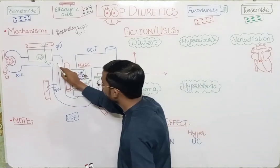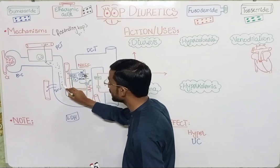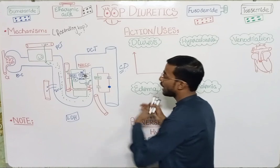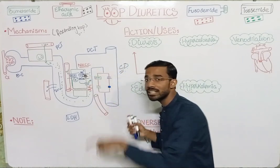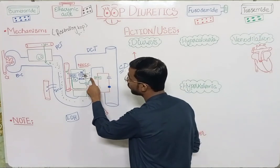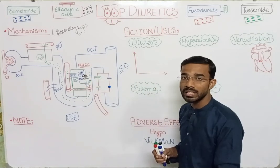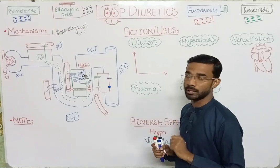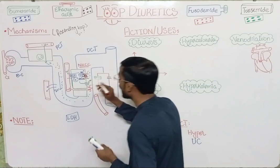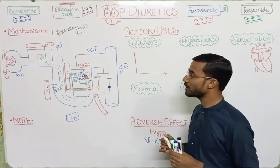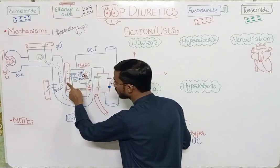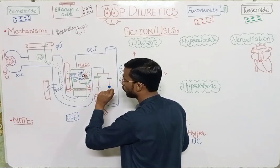When the loop diuretic reaches the ascending loop, it blocks the sodium-potassium-chloride co-transporter (NKCC). Once this transporter is blocked, sodium cannot move inward, potassium cannot move inward, and chloride cannot move inward.